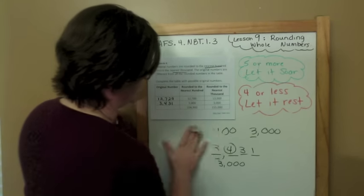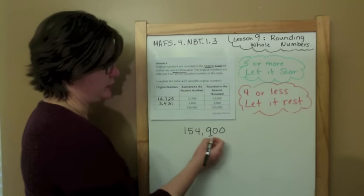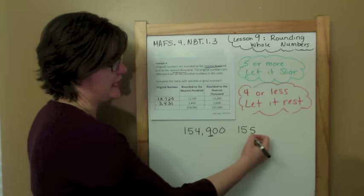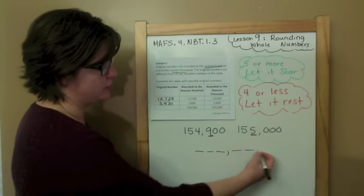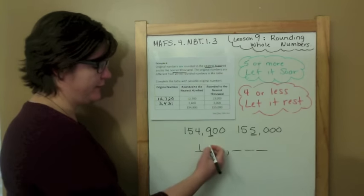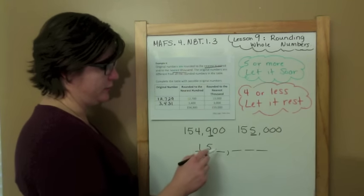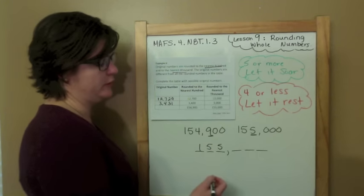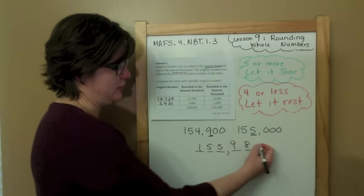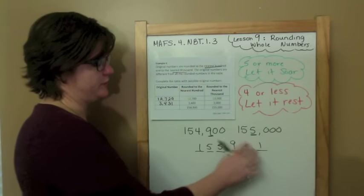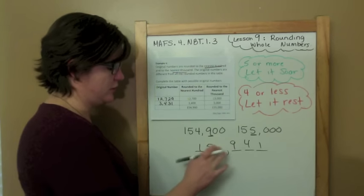And the last one: round it to the nearest hundred — it's 154,900. Round it to the nearest thousand — it's 155,000. They both have six digits. They both have one, five, and then the difference is a four versus a five. If I were to put a five here and a nine here, rounding to the nearest hundred would make the nine go up to a ten, which would make this go up to a six — that's wrong. So I don't want that.